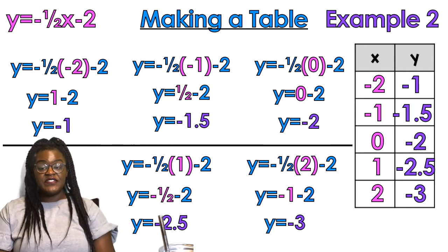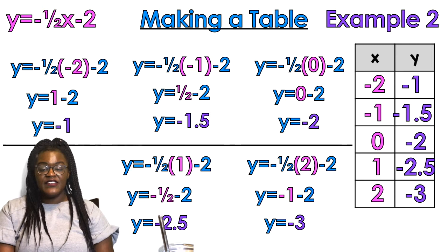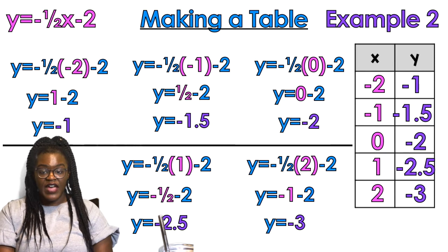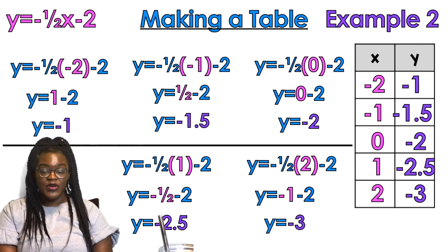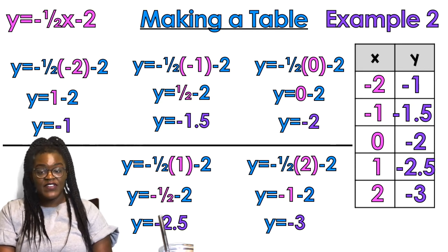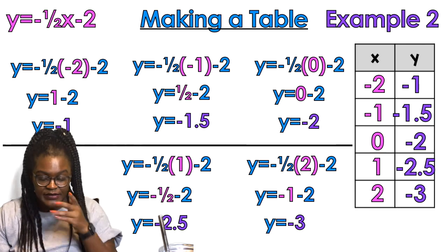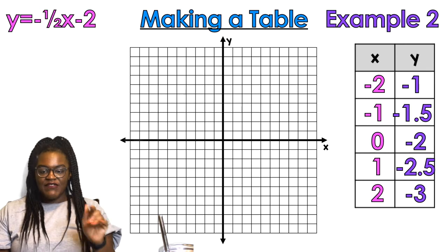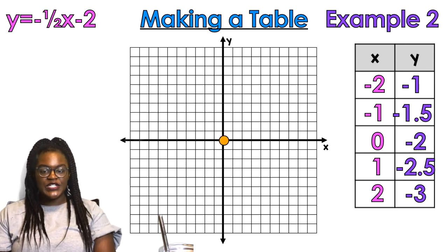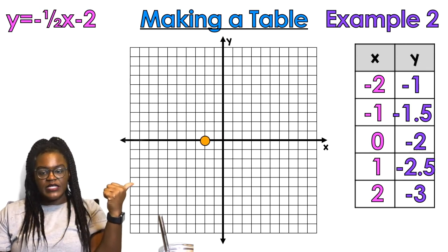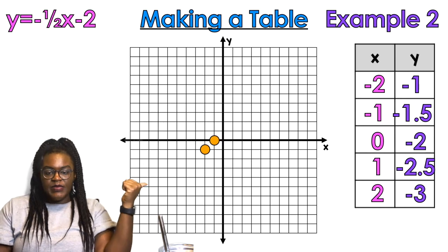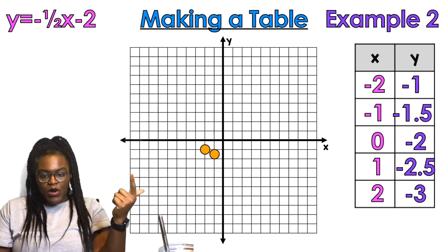The easy way to check yourself is to see if the y values are evenly spaced — to get from negative one to negative 1.5 is 0.5, to get from negative 1.5 to negative 2 is another 0.5, to get from negative 2 to negative 2.5 is 0.5, to get from negative 2.5 to negative 3 is 0.5. Now I'm going to plot my points on the graph, starting at the origin — go left two spaces, down one space.